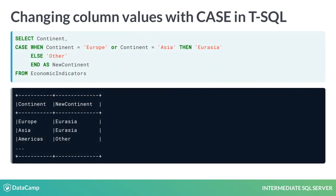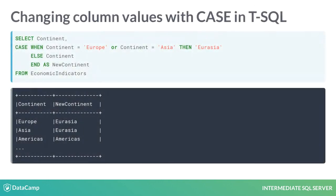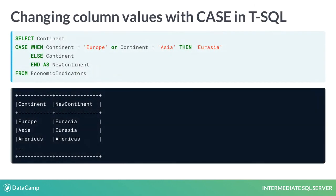In this query, if the continent is not Europe or Asia, the value in the new continent field will be 'other'. Take a look at how the case statement is evaluating the values in the continent field to determine what value to put into it.